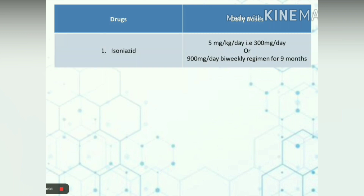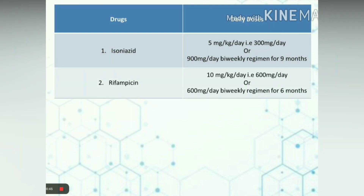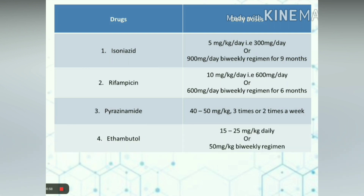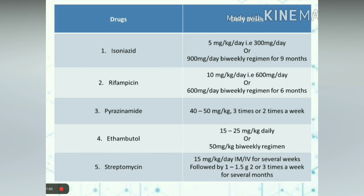Let us see the drugs and their daily doses. Isoniazid is used in a dose of 5 mg per kg per day, that is 300 mg per day. Pyrazinamide is used at 40 to 50 mg per kg, 2 or 3 times a week. The dose of ethambutol is 15 to 25 mg per kg daily. Streptomycin is 15 mg per kg per day, intramuscular or intravenous, for several weeks.